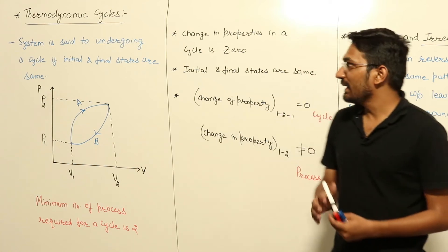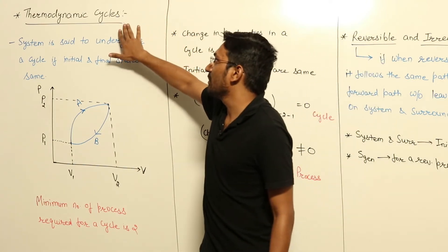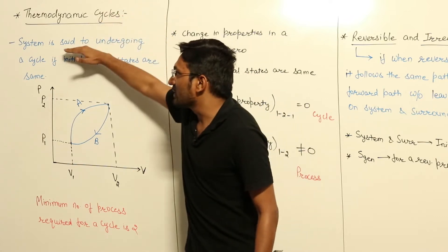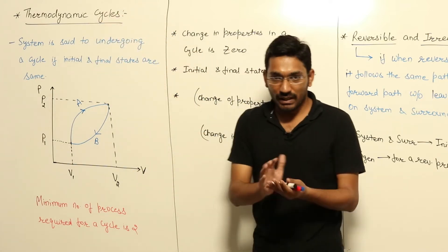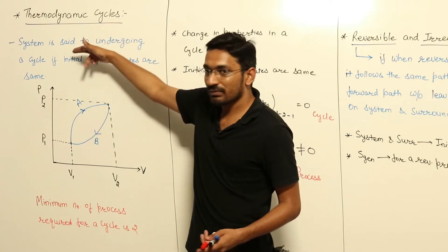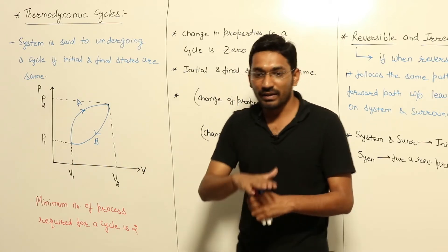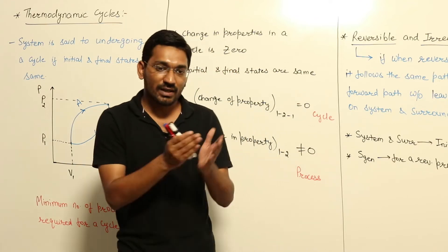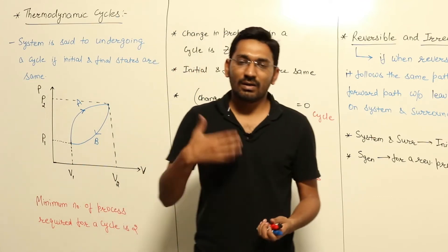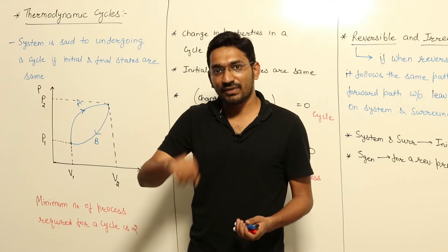Our next topic after degree of freedom is thermodynamic cycles. As the name suggests, it will be a cycle. A system is said to be undergoing a cycle if its initial and final states are the same. States are the characteristics or the condition of a system, defined with the help of some intensive independent properties like pressure or temperature.